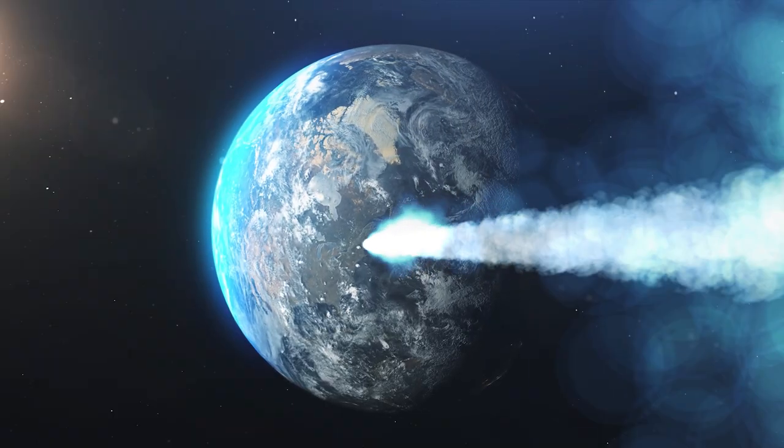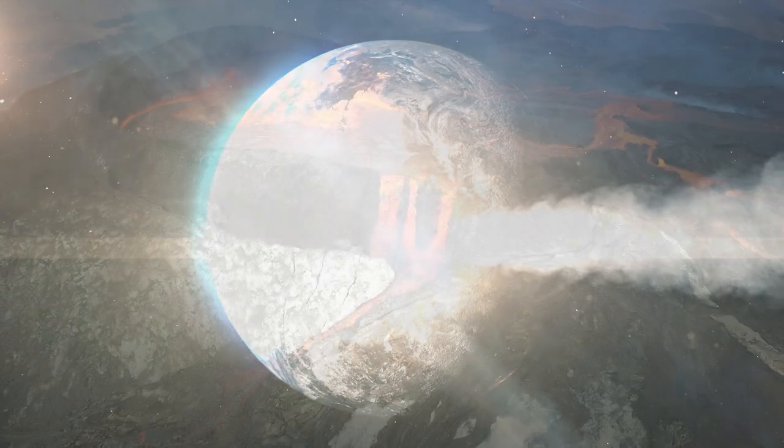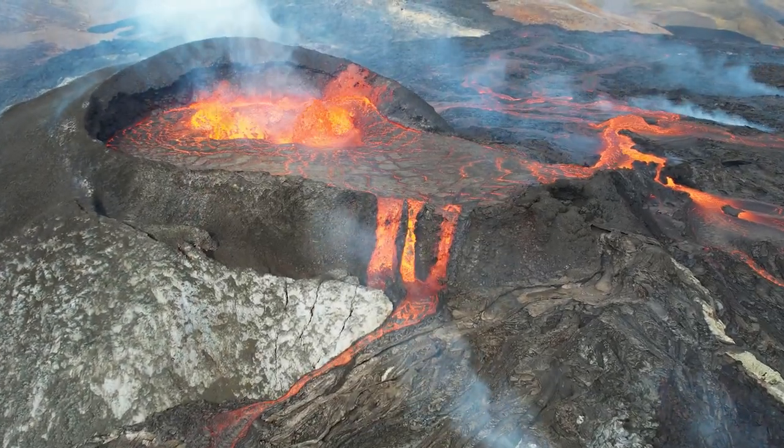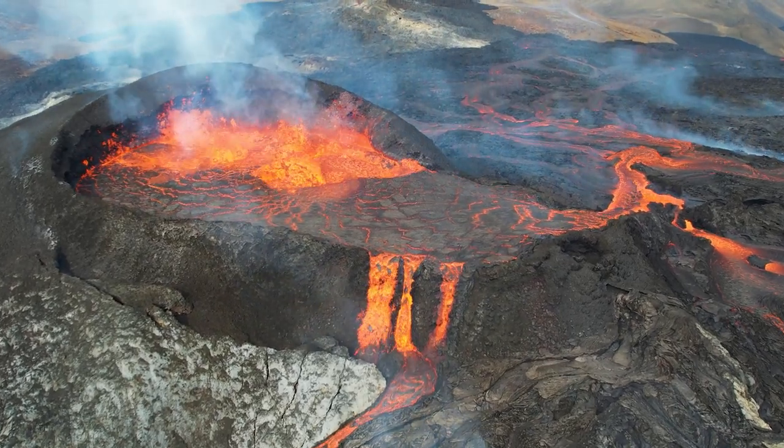That life may have been seeded on Earth by life-bearing comets as soon as the conditions here allowed life to flourish about 4.1 billion years ago, which is 400 million years after the planet was formed.